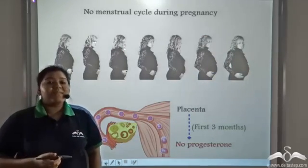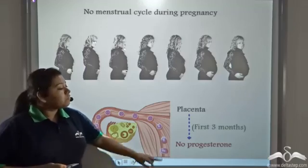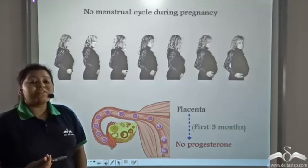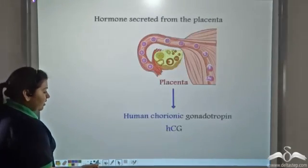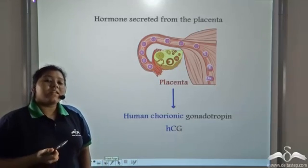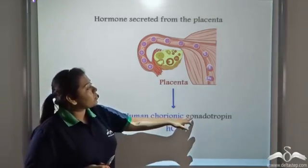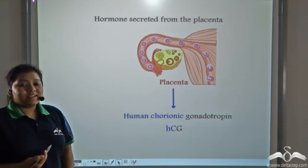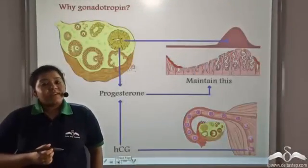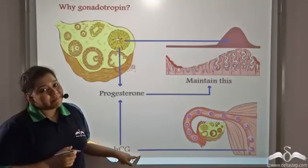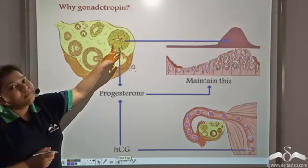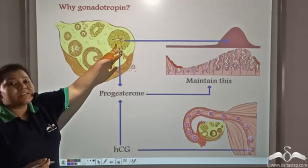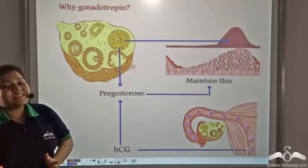However, the placenta does not secrete progesterone for the first three months of pregnancy. Instead, the placenta secretes another hormone known as human chorionic gonadotropin, or HCG, which helps maintain the endometrial lining. HCG maintains the corpus luteum and prevents it from degenerating. The main function of the corpus luteum is to secrete progesterone, which maintains the endometrial layer.